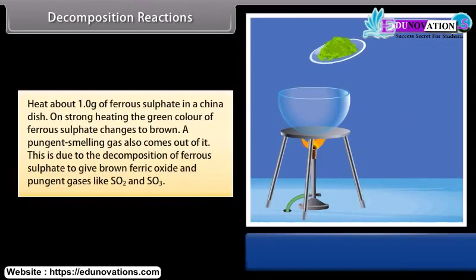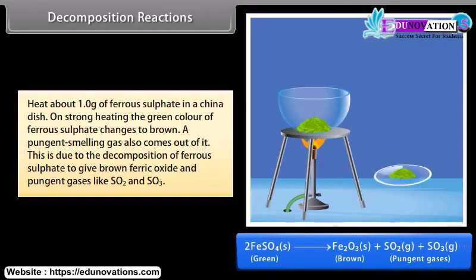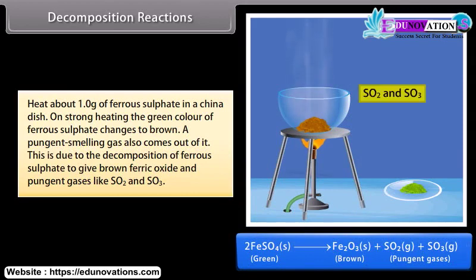Heat about 1.0 gram of ferrous sulfate in a china dish. On strong heating, the green color of ferrous sulfate changes to brown. A pungent smelling gas also comes out of it. This is due to the decomposition of ferrous sulfate to give brown ferric oxide and pungent gases like SO2 and SO3.